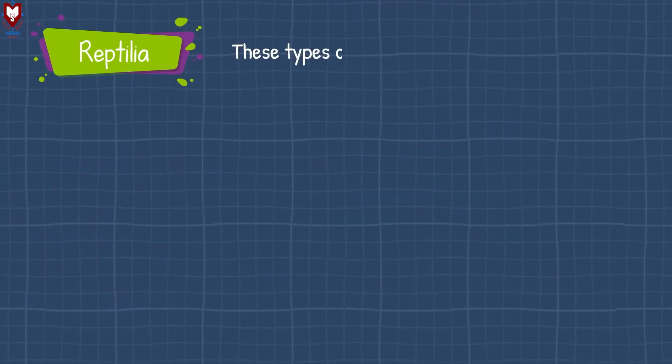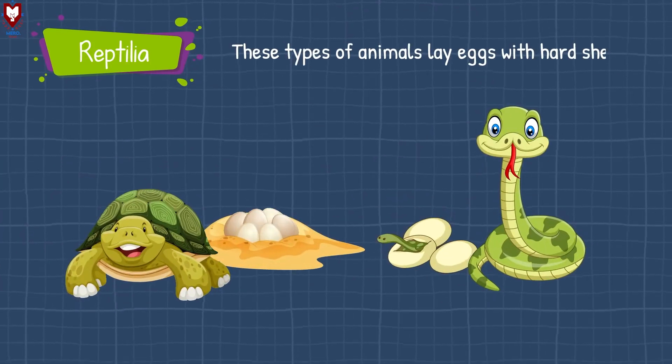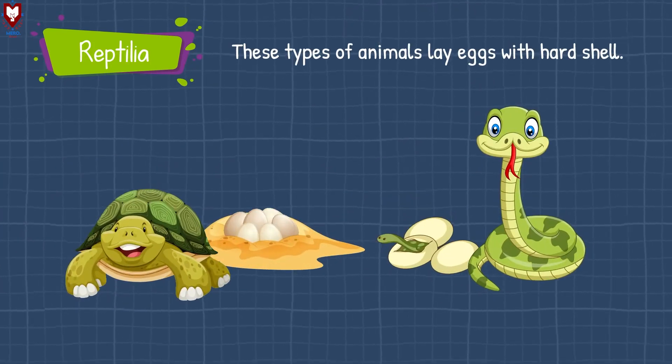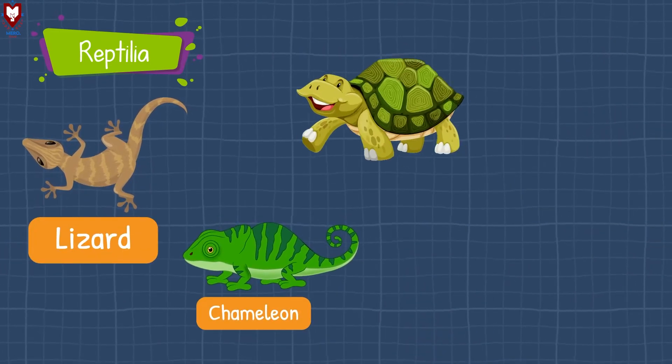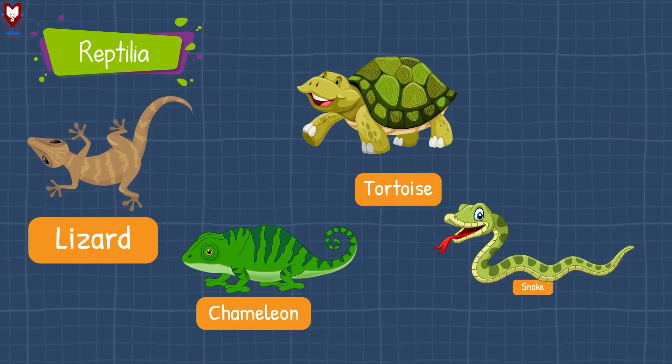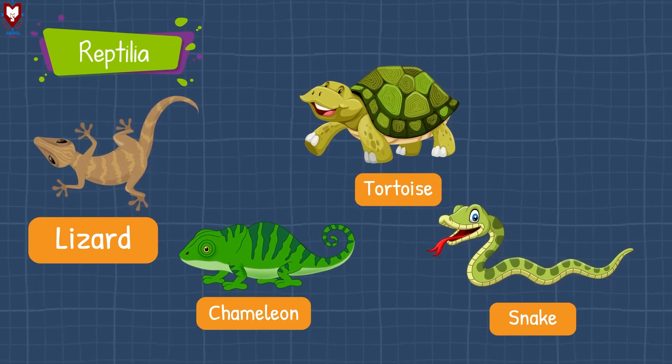These types of animals lay eggs with a hard shell. Lizard, chameleon, tortoise, and snake are some examples of this class.